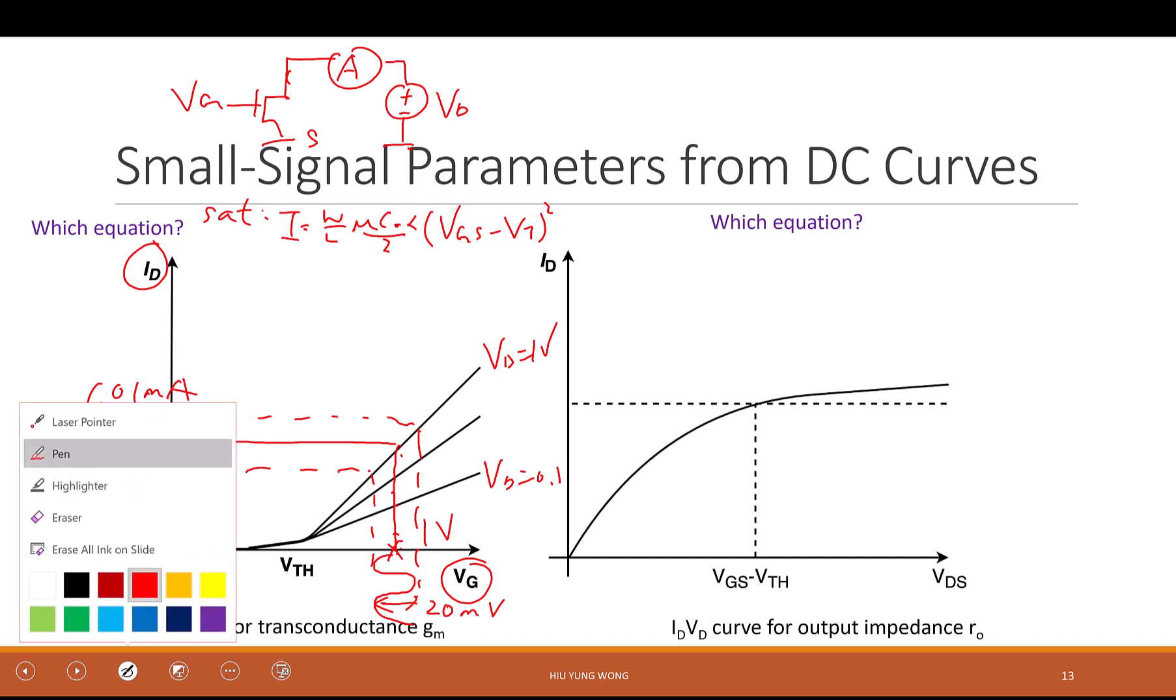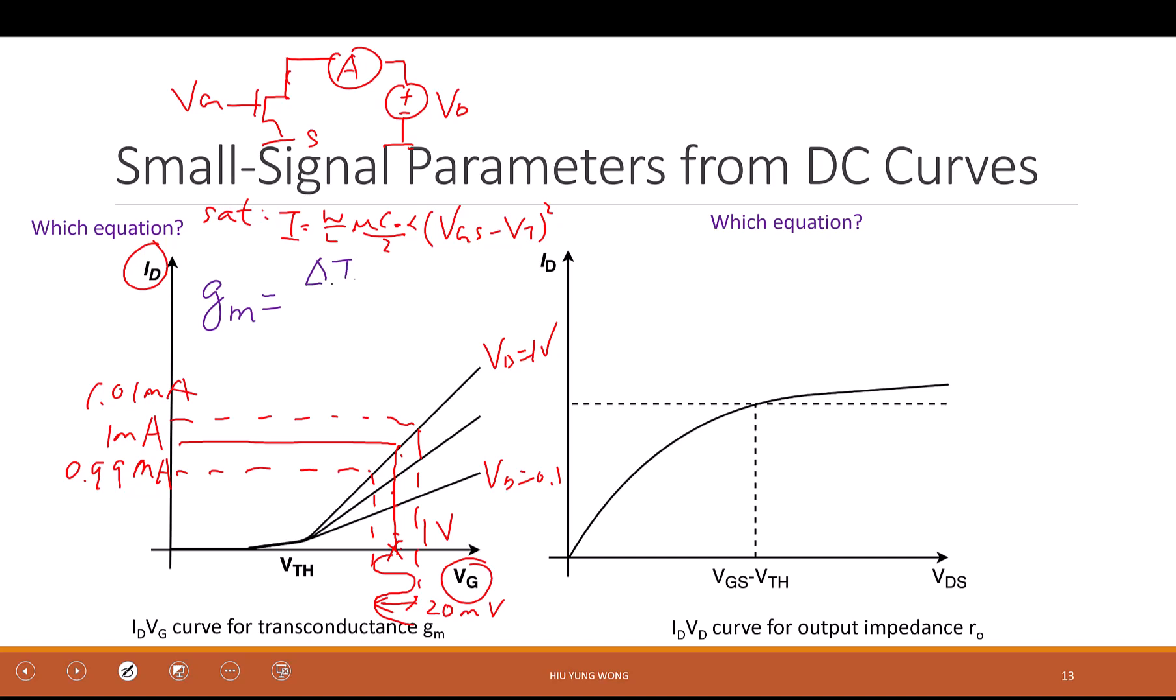But what we care is not the total value. What I care about is something called g_m, is the delta I divided by delta V. So what is the delta V in this case? How much did I change from peak to peak? Just read from here. 20 millivolts. And when I change 20 millivolts, what is the peak-to-peak change of the current? 20 microampere.